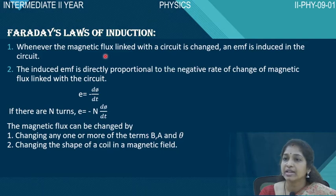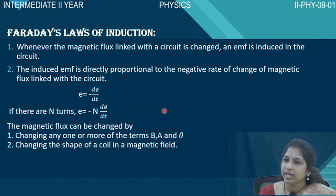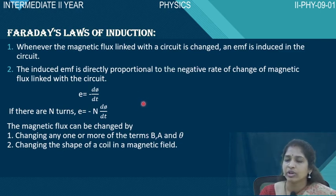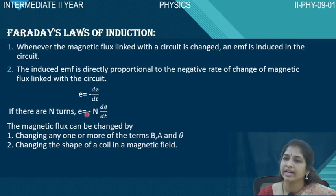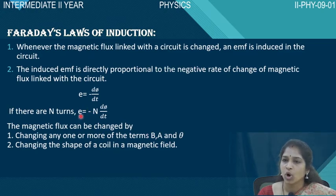N indicates the number of turns in the coil. If the coil has only one turn, substitute N = 1, giving E = -dΦ/dt. If there are 3 turns, E = -3 dΦ/dt. So the induced EMF also depends on the number of turns. The negative sign indicates that this EMF always opposes the change in the flux — which is what we discuss in the next topic: Lenz's law.